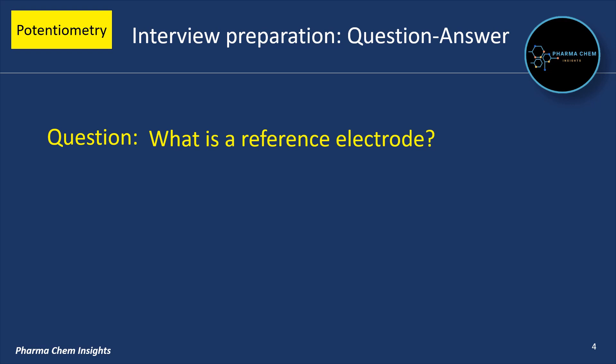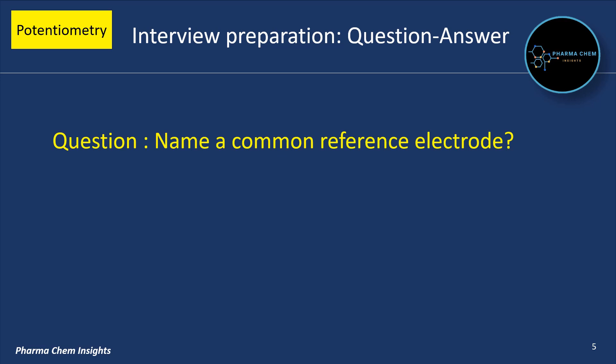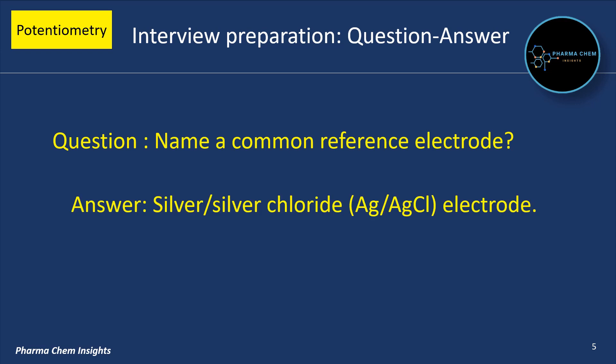What is a reference electrode? An electrode with a known and stable potential used as a reference point in potentiometric measurements is a reference electrode. Name a common reference electrode: the silver coated with silver chloride electrode.